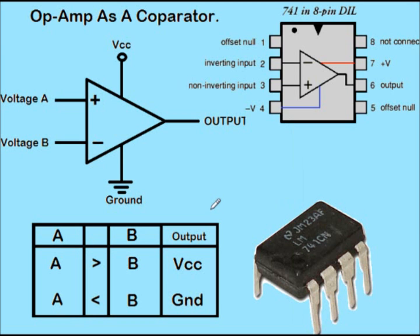Let us now learn how a comparator works. This here is the op-amp configured as a comparator. Two voltages are provided at the inverting and non-inverting terminals of the op-amp — let us call them voltage A and voltage B. The op-amp is powered by VCC and the other terminal is grounded, and the output is taken from the output pin.